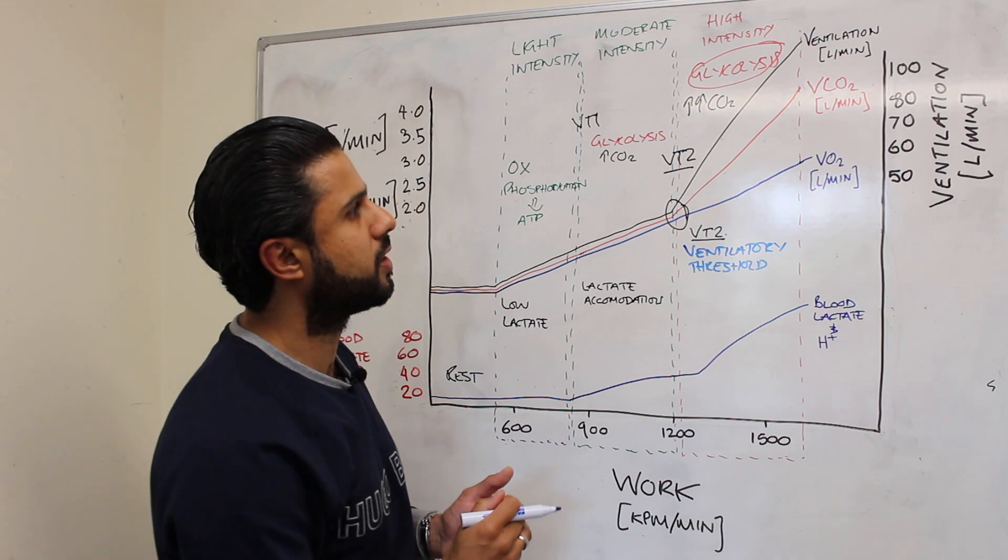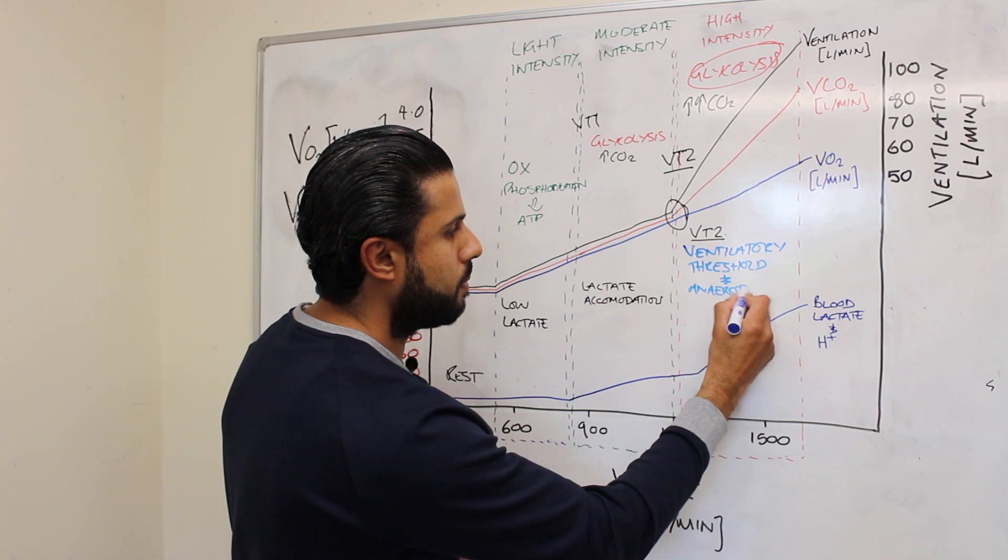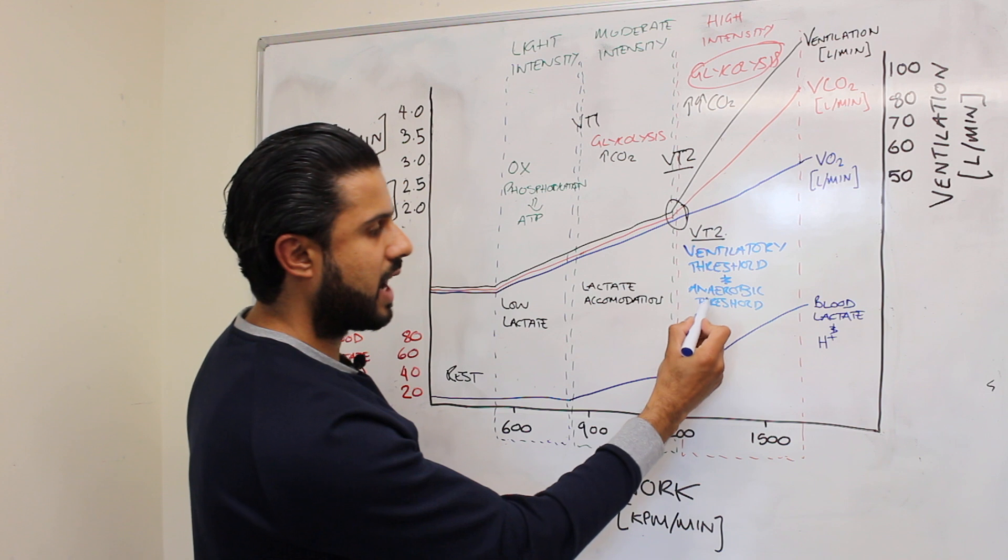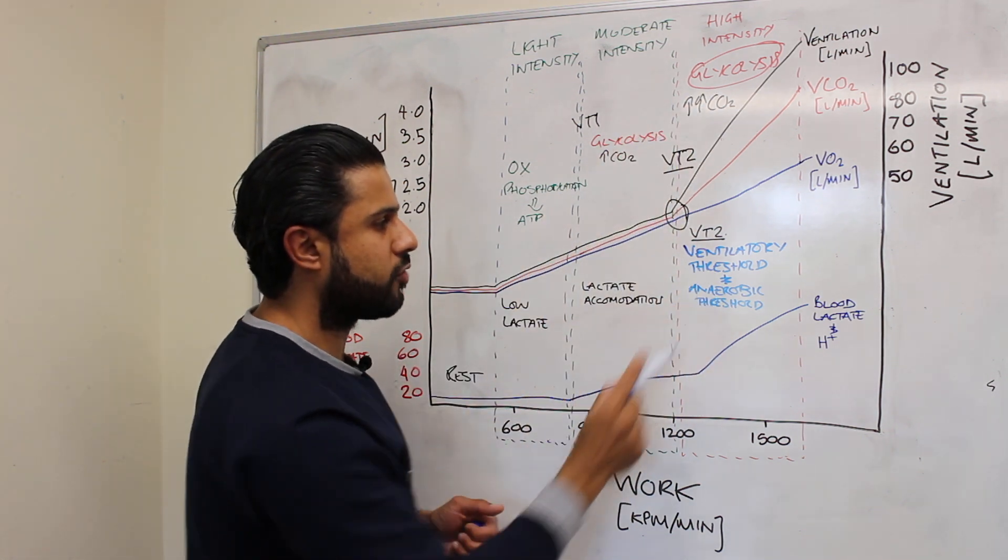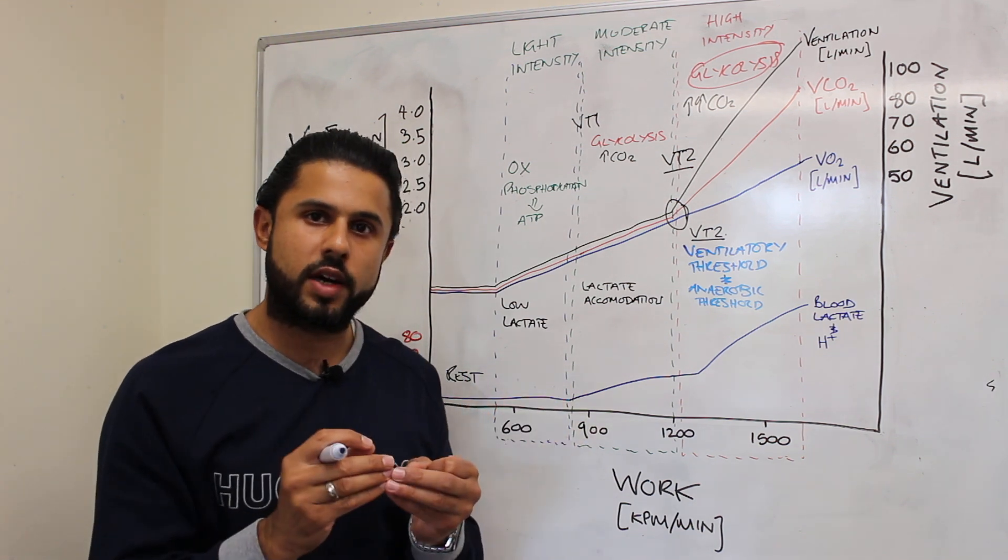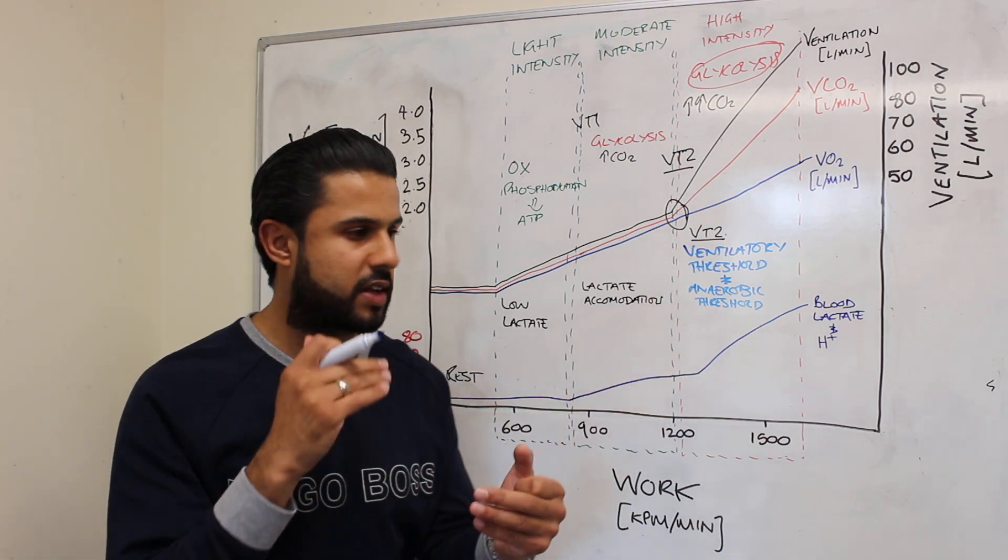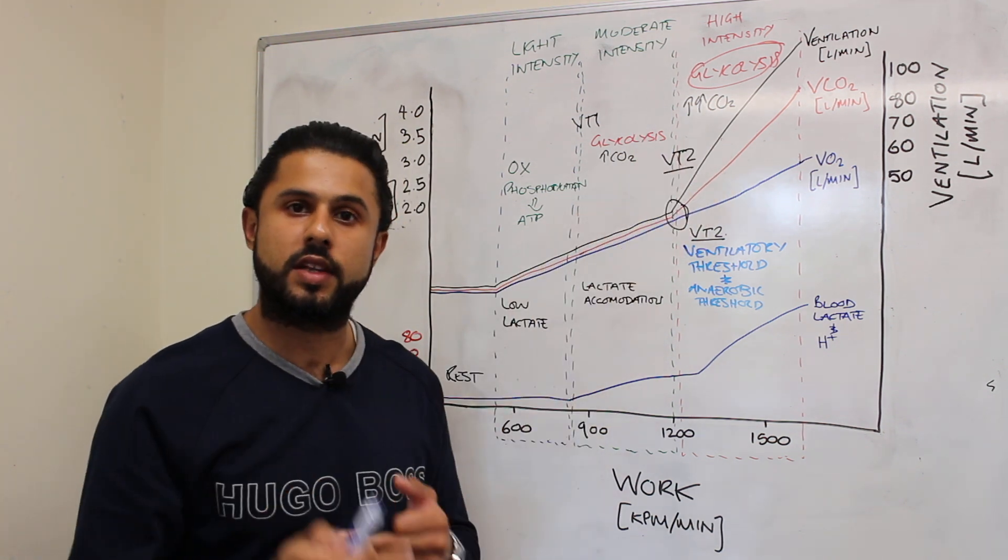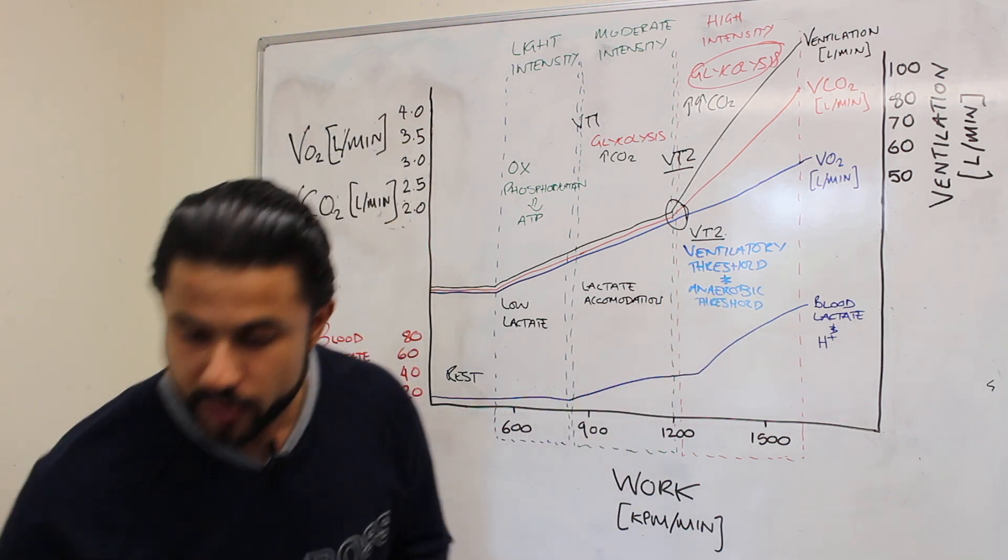It's also known as the anaerobic threshold as well because the change in ventilation has happened because we're now relying upon an anaerobic energy source, glycolysis. So ventilatory threshold and anaerobic threshold are terms that are often used interchangeably and that's not surprising because they're reflecting very similar mechanisms. They're reflecting very similar metabolic changes that are happening as a result of going from a moderate to a high intensity exercise level.